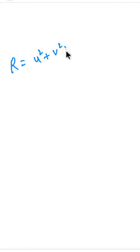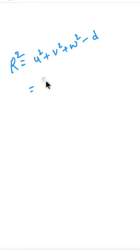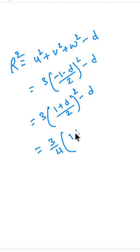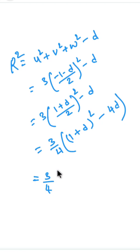Since we need the radius, we use the formula: r² = u² + v² + w² − d. This is very similar to the 2D circle formula with an extra term for the z-component. Substituting u = v = w = (−1−d)/2, we get r² = 3·((1+d)/2)² − d, which simplifies to (3/4)·(d + 1/3)² − 8/9... wait, let me re-express: r² = (3/4)·(1+d)² − d, written as (3/4)·(d + 1/3)² + (some constant).